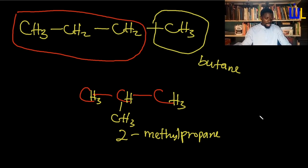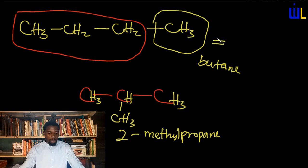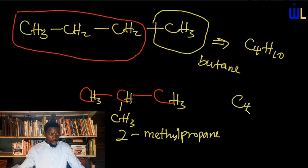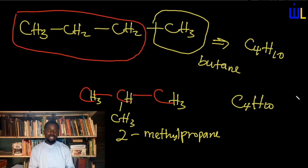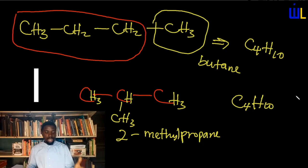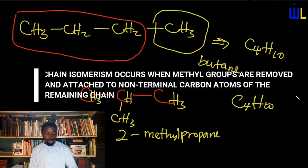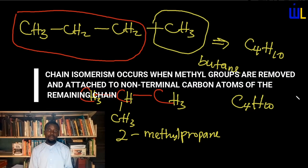You would notice that these are actually two different compounds: butane and 2-methylpropane. But when you consider their molecular formulas, both have four carbon atoms. Counting hydrogens: butane is C4H10, and 2-methylpropane also gives C4H10. These two are referred to as isomers — different substances that have the same molecular formula. Chain isomerism is produced by removing a methyl group and attaching it to a non-terminal carbon atom of the remaining chain.